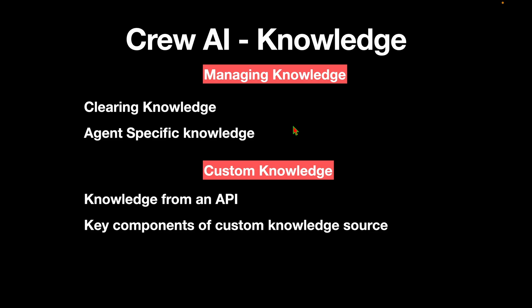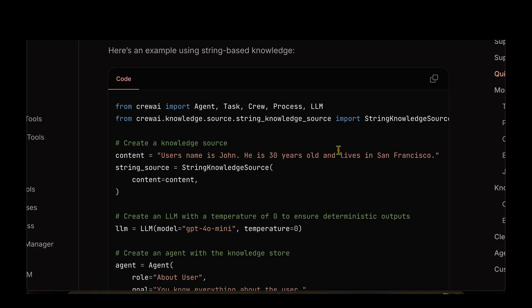After looking into those samples, we'll move on to how we can manage the knowledge — for example, how we can delete or clear the knowledge, which is essentially memory. We'll also look into agent-specific knowledge: if you have two agents and want them to have different levels of knowledge about different topics, how do we have granular control over the knowledge? Then we'll move on to custom knowledge — for example, if your knowledge comes from an external API in real time. Finally, we'll look into the key components of a custom knowledge source.